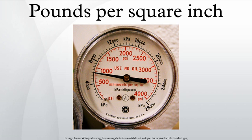Pounds-per-square-inch absolute (PSIA) is used to make it clear that the pressure is relative to a vacuum rather than the ambient atmospheric pressure. Since atmospheric pressure at sea level is around 14.7 psi, this will be added to any pressure reading made in air at sea level.